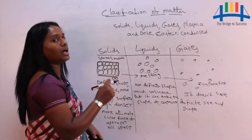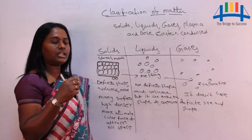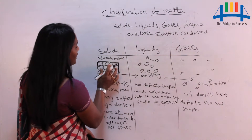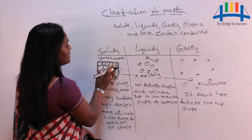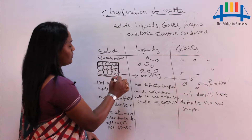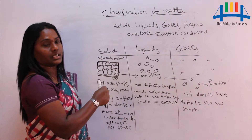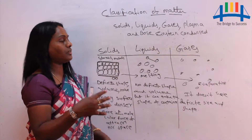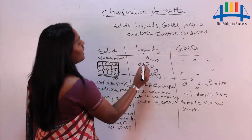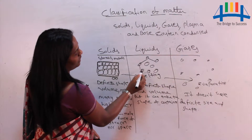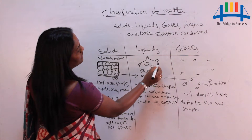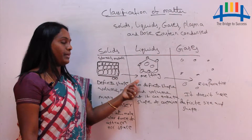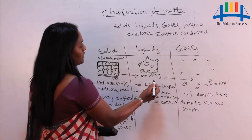During melting, after applying heat energy, the force of attraction between particles decreases and the intermolecular space increases. The particles, which were very closely packed, gain kinetic energy — meaning the motion or movement of particles increases — thereby the space between them increases. This process is called melting.